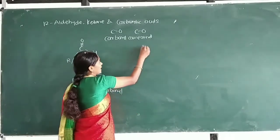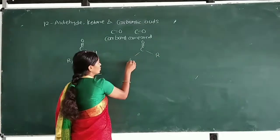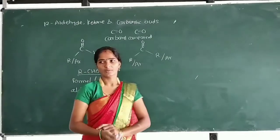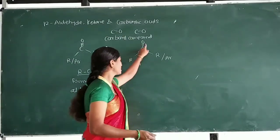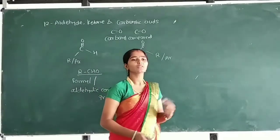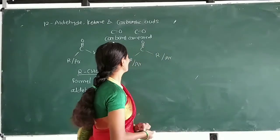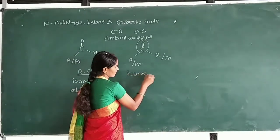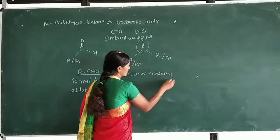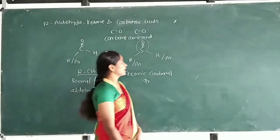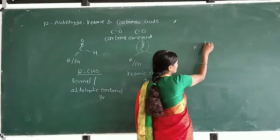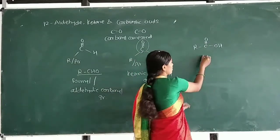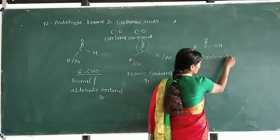In ketones, this carbonyl group is attached to two alkyl groups or two oil groups, either similar or different. The functional group C=O in ketones is called the ketonic carbonyl group.